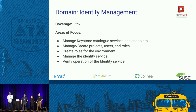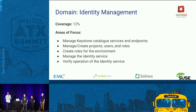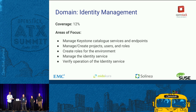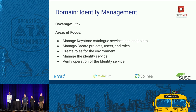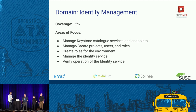Next is identity management — a bigger chunk of the exam at 12%. You really have to understand how to manage the Keystone catalog services and endpoints, be able to manage and create projects, users, roles, and tenants, and manage the users of that environment. You also need to verify that it's operational, so along with creating users and domains, you need to be able to troubleshoot any issues that arise.